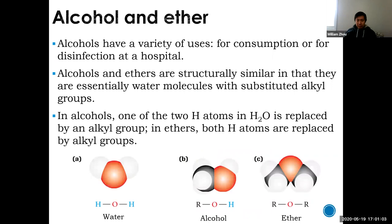Alcohol has two major roles for humans: one is for consumption — you drink it — and the other is for disinfection. Different types of alcohols are used for different purposes; they're not interchangeable. You can use drinking alcohol to disinfect, but you cannot drink disinfecting alcohol. You cannot buy isopropyl rubbing alcohol from a drugstore and drink it — that is highly toxic.